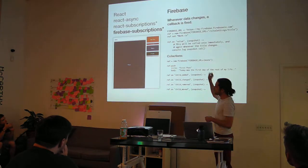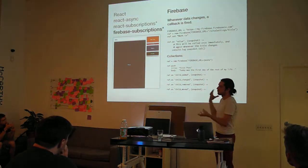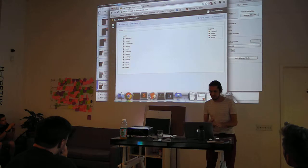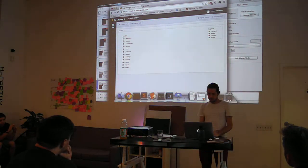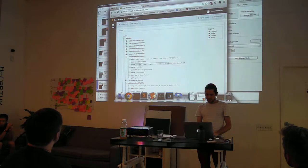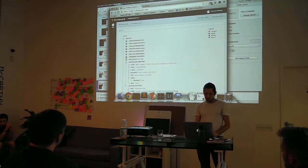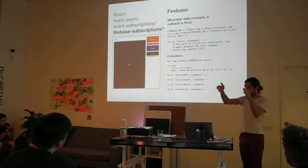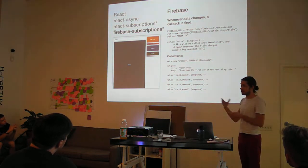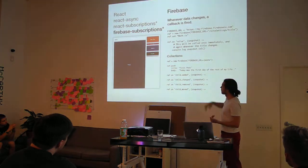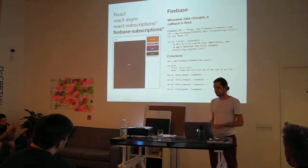Firebase is a database designed around real-time data. When you create a database, it gives you a live hierarchical view of your data. I have elements, and each element has a body, a date, an image, an owner, and so on. In your code, you give Firebase the hierarchical path to your data, and it will fire a callback — either in your Node.js server or in the browser — every time that data changes. Firebase also has collections so you can push things and have a collection of posts of some kind.